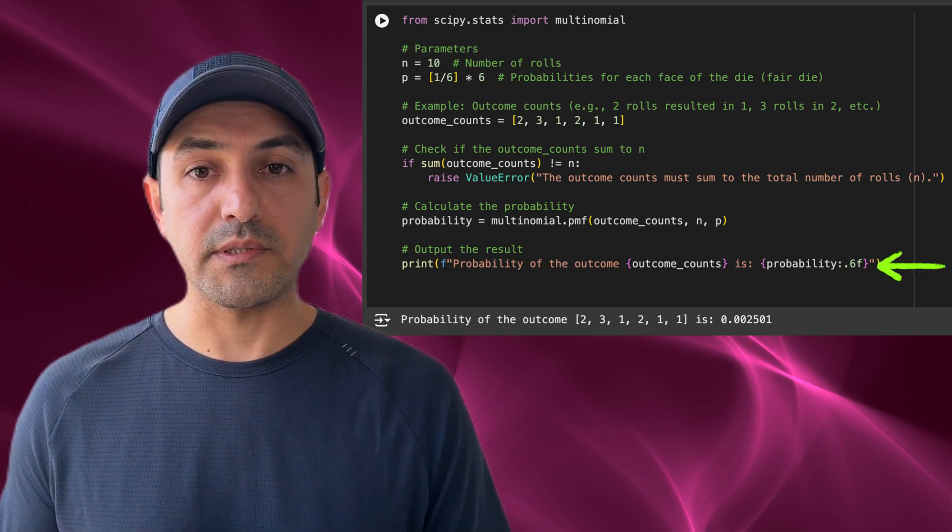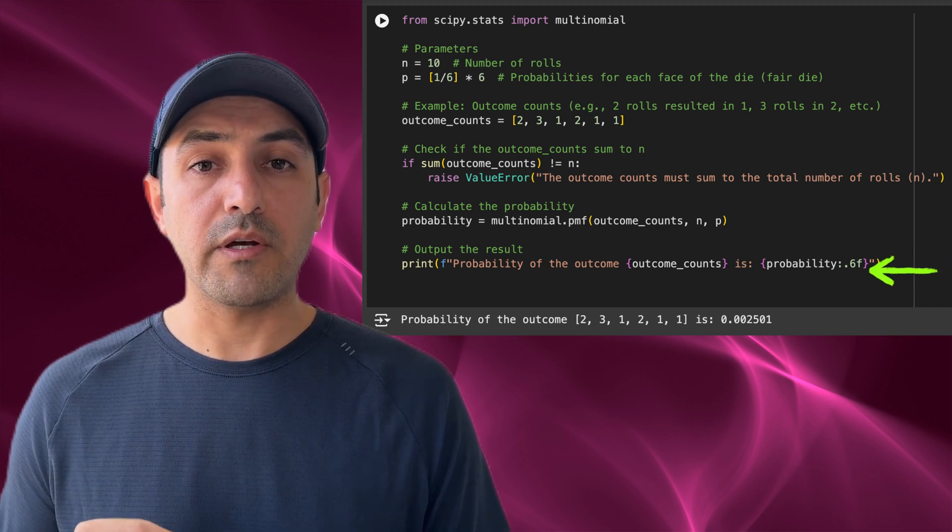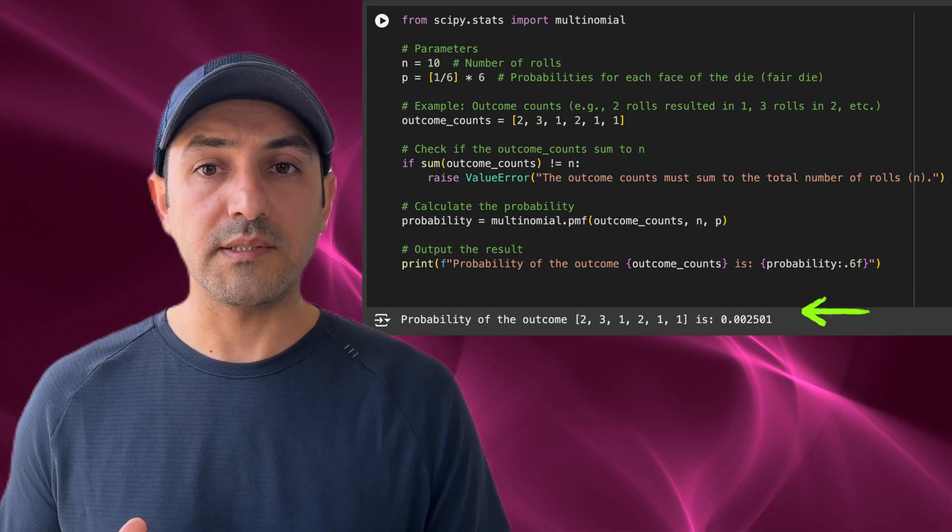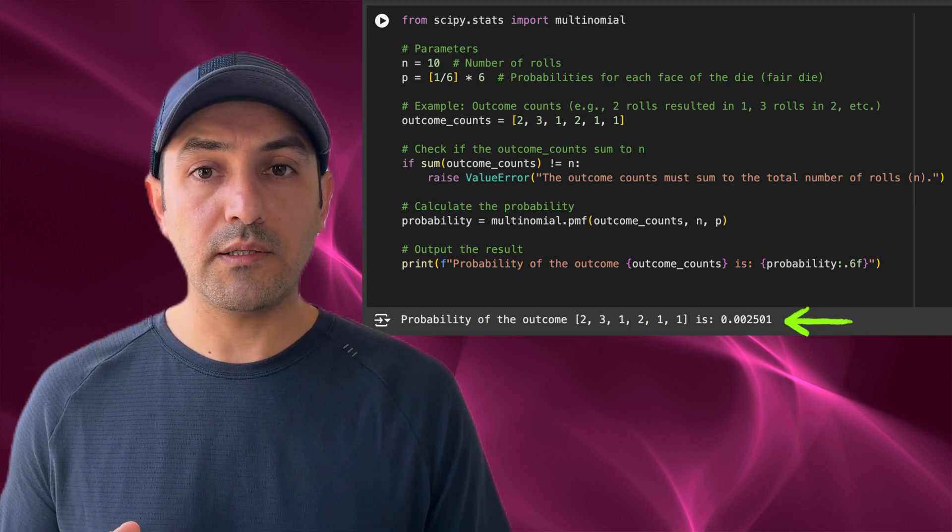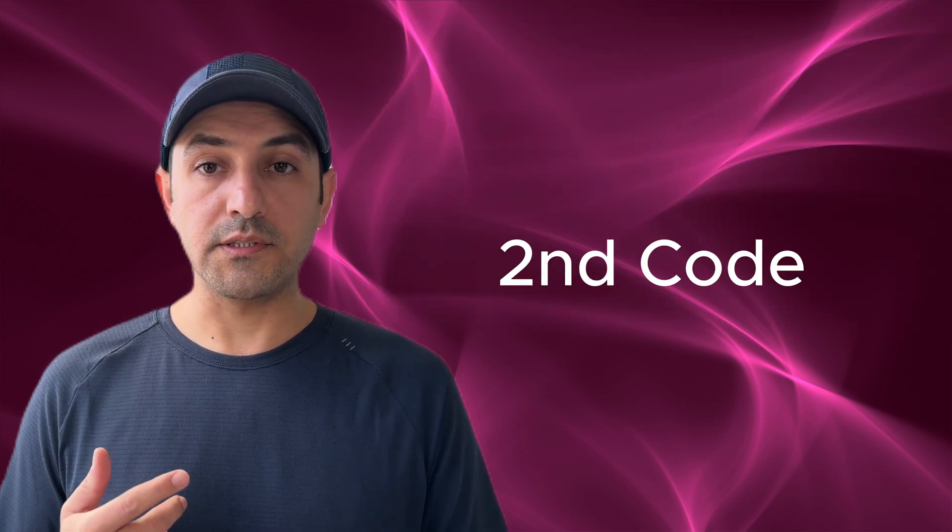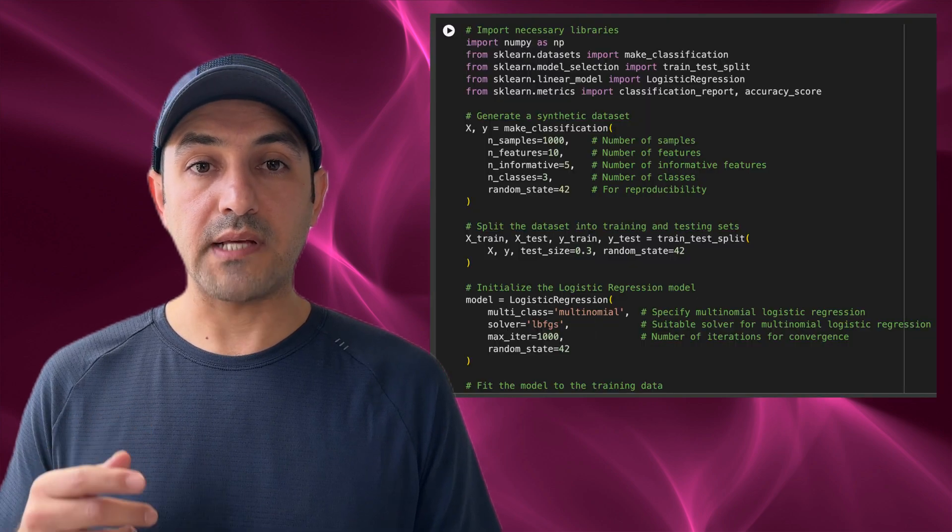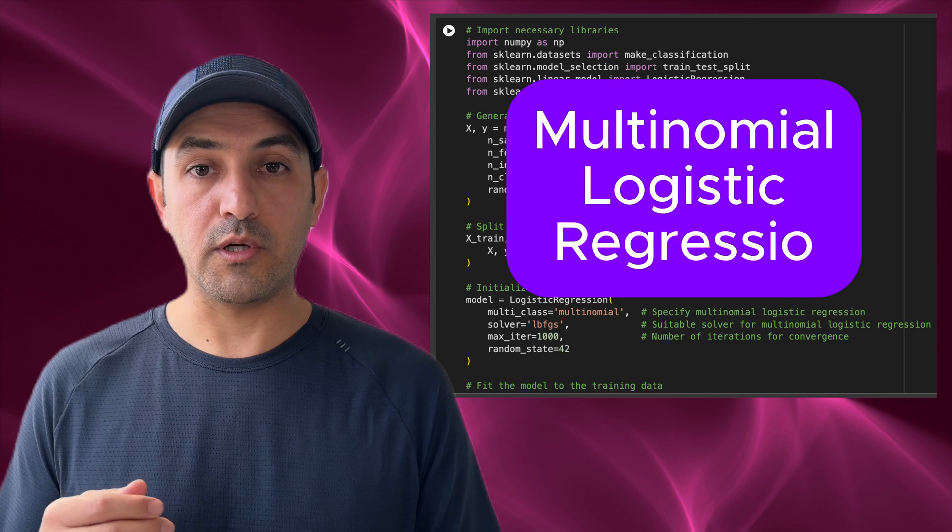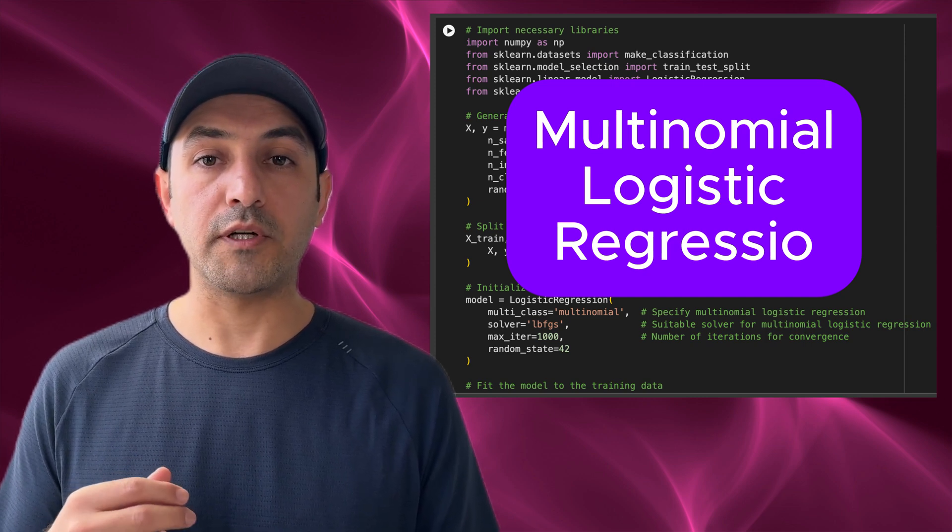Finally, the result is printed. For instance, the probability of observing this outcome when rolling a fair dice 10 times is displayed here. This probability quantifies how likely it is for this specific distribution of results to occur. Another example that we discussed in this video was classification in machine learning. Here is a sample code that does a multinomial logistic regression that uses the softmax probability function under the hood.